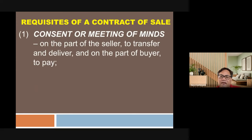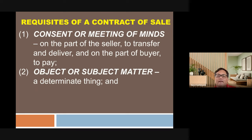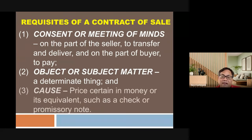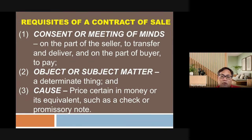The requisites of a contract of sale are: first, consent or meeting of the minds — on the part of the seller to transfer and deliver, and on the part of the buyer to pay; second, the object or subject matter, which must be a determinate thing; and third, the cause or price certain in money or its equivalent, such as a check or promissory note. The mnemonic is COC: Consent, Object, Cost.